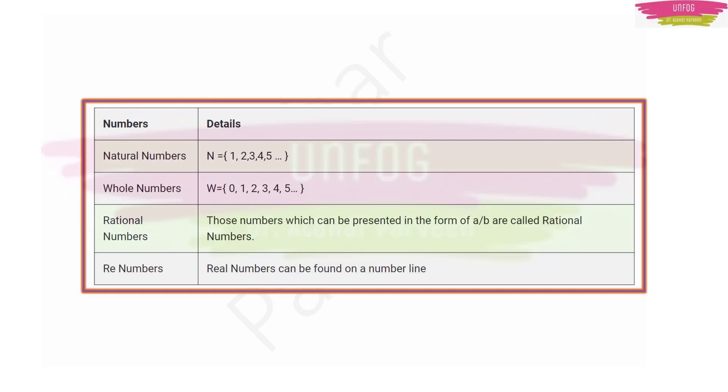Here you have to note one important point that the difference between natural numbers and whole numbers is that 0 comes under whole numbers. 0 does not come in natural numbers. This is the main point of this table.